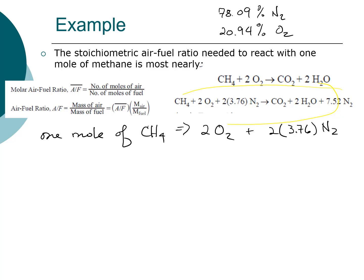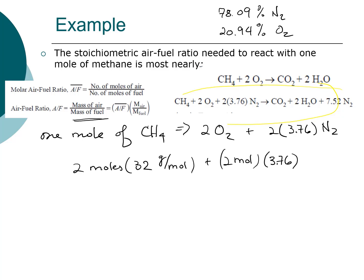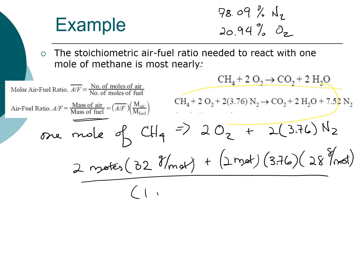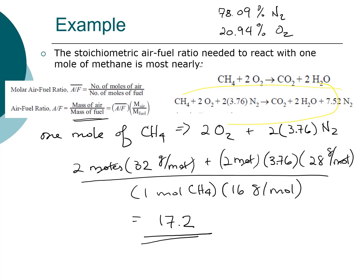Because we're asked for the air-to-fuel ratio — mass of air divided by mass of fuel — we take 2 moles of oxygen times the molecular weight of oxygen, plus 2 × 3.76 moles of nitrogen times the molecular weight of nitrogen. Moles cancel, leaving grams. We divide by 1 mole of methane times the molecular weight of methane. That equals 17.2. So the stoichiometric air-to-fuel ratio needed to react with 1 mole of methane is most nearly 17.2.